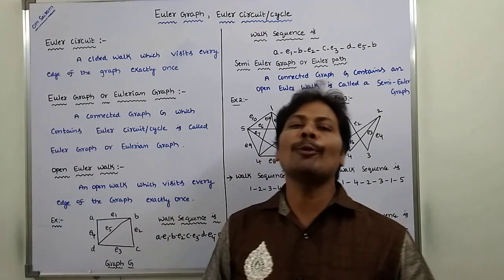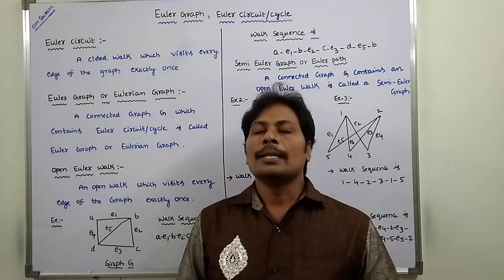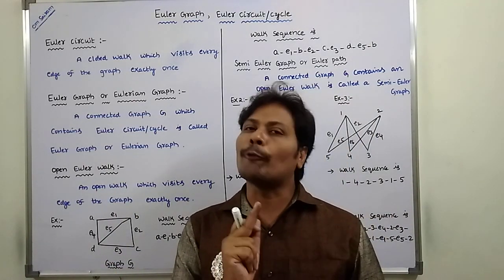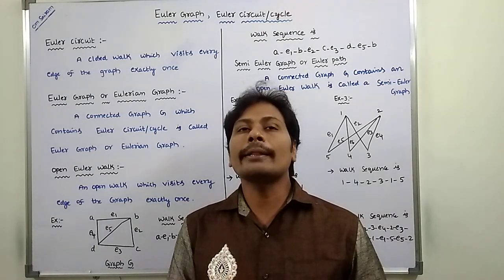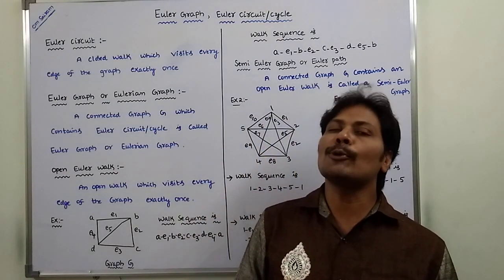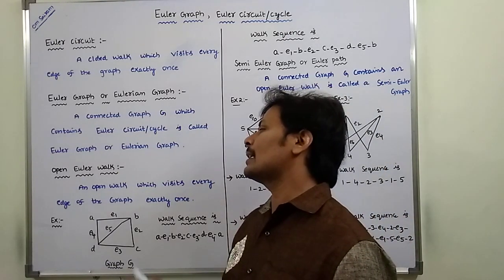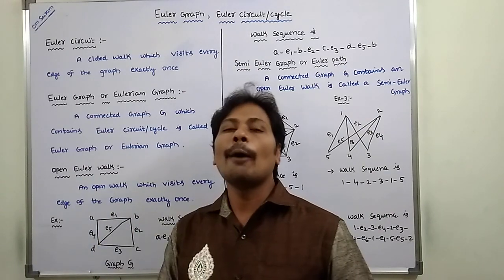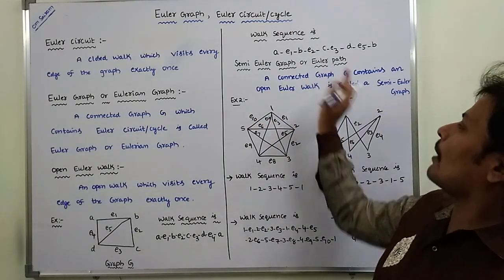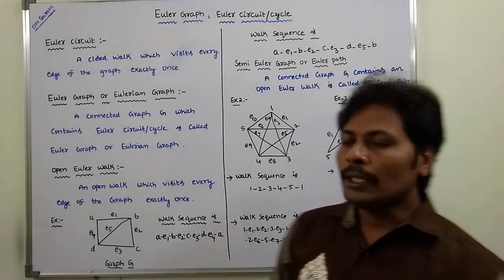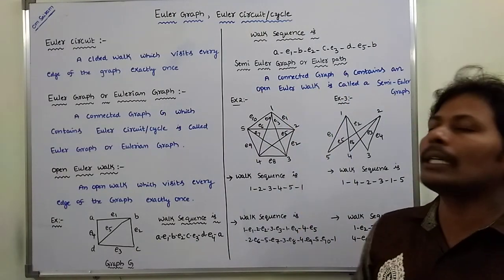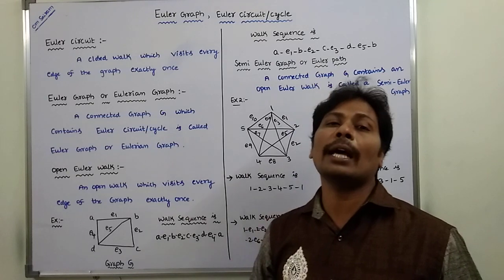Next definition: open Euler graph. An open Euler graph means the walk sequence is an open walk and visits all the edges of a graph exactly once. By satisfying these two conditions, we can say that connected graph G has an open Euler walk. A connected graph G that contains an open Euler walk is called a semi-Euler path.